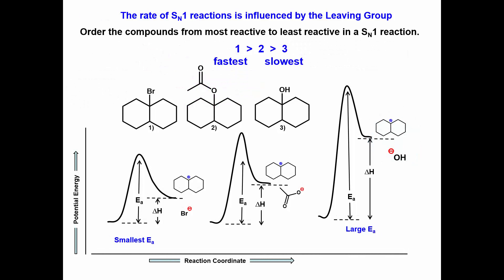Thus compound 1 would undergo an SN1 reaction more readily than compound 2, and the alcohol would be the least reactive and under normal conditions would not occur.